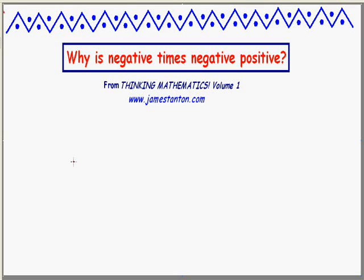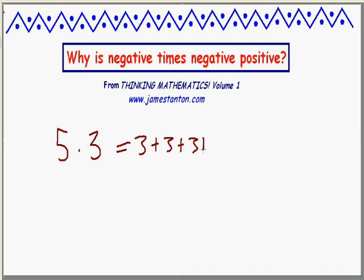But first of all, let's make sure we understand what multiplication is, at least at a very basic level. For example, if I write 5 times 3, that can be thought of as repeated addition — at least at the level of counting numbers. Many mathematicians will disagree, but at the very beginning this can be thought of as 5 groups of 3. So it's 3 plus 3 plus 3 plus 3 plus 3, giving the answer 15.